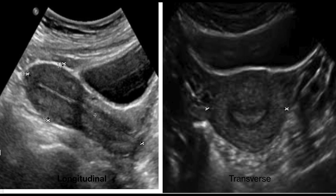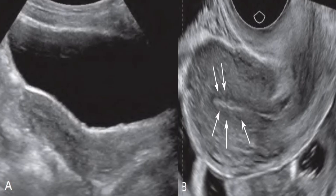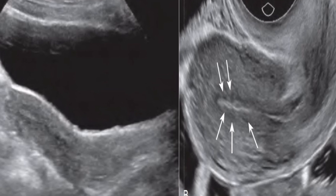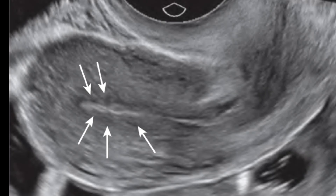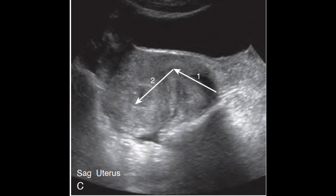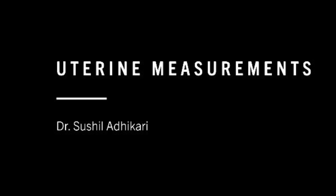Hello everyone, today I am going to talk about uterine measurements and positions. At the end of this video you will be able to measure uterine length, height, and width in transabdominal and transvaginal scan. You will also be able to identify various uterine positions like anteverted, anteflexed, anteverted retroflexed, etc. So without further delay, let's start.